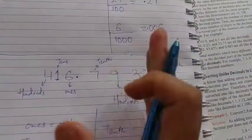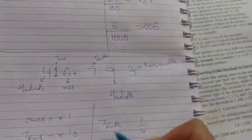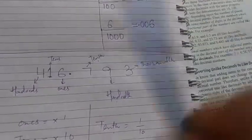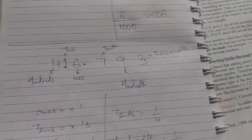So the first immediate, joh right hota hai, usko hum padhen 10th. It's not 10s, it's 10th. T-E-N-T-H, 10th. Then the immediate right to that will be 100th, not 100s, it's 100th, then 1000th, then 10,000th.